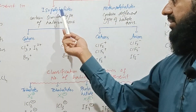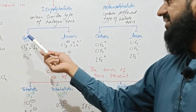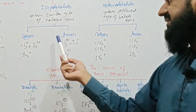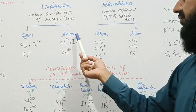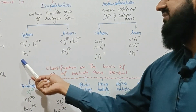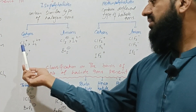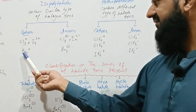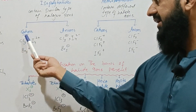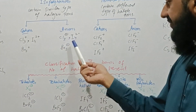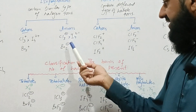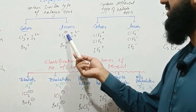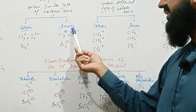Isopolyhalide can be further classified into two classes: isopolyhalocations and isopolyhaloanions. Since all halogen atoms are the same, positively charged species are classified as isopolyhalocations, and the negatively charged ions containing similar types of halogen are classified as isopolyhaloanions.